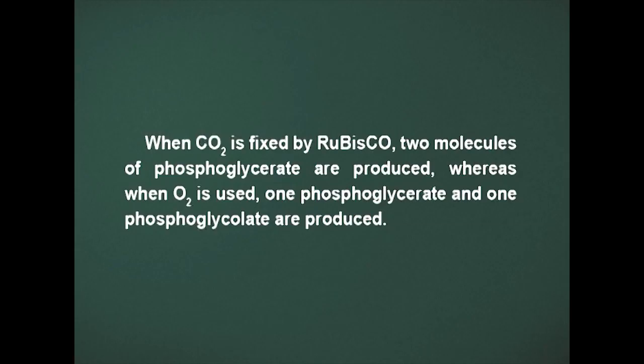So, the reactions begin in the chloroplasts with the oxygenation of ribulose 1,5-bisphosphate or RuBP. When carbon dioxide is fixed by Rubisco, 2 molecules of phosphoglycerate are produced, whereas when oxygen is used, 1 phosphoglycerate and 1 phosphoglycolate are produced. Photorespiration involves conversion of the phosphorylated glycolate to the amino acid glycine, followed by the conversion of 2 glycine molecules containing 2 carbons each to the amino acid serine containing 3 carbons, plus 1 molecule of carbon dioxide and 1 of ammonia. Finally, the serine is converted to glycerate and then phosphoglycerate. There is a net loss of 1 carbon dioxide and 1 ammonia for each oxygenation event.